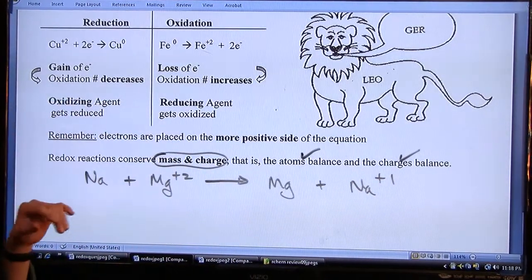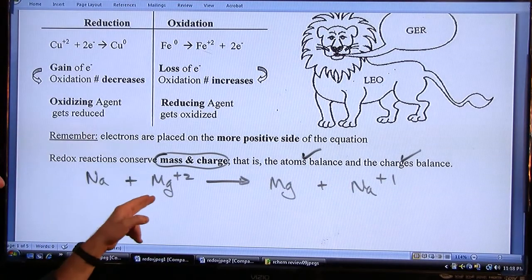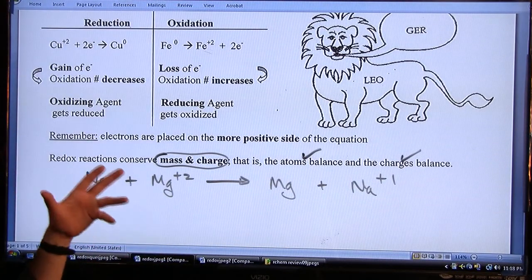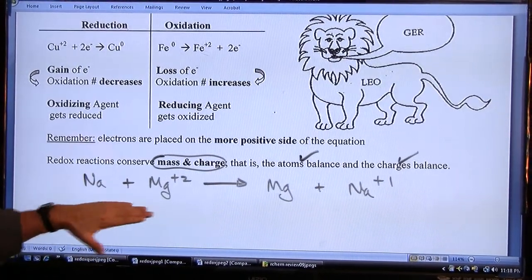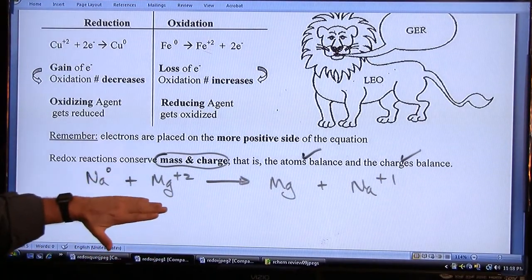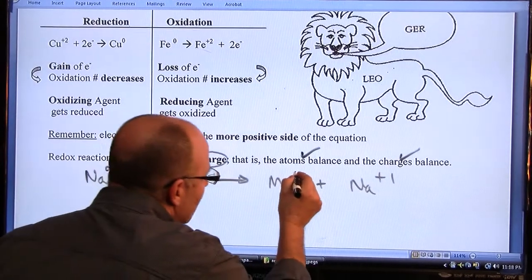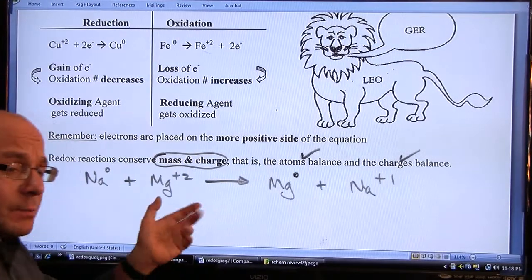Now the atoms balance in this case—1 Na, 1 Na, 1 Mg and 1 Mg—but the charges don't balance. The total charge on the left side is plus 2 (Na is 0, Mg is plus 2), while the total charge on the right side is plus 1. So there's a charge imbalance.